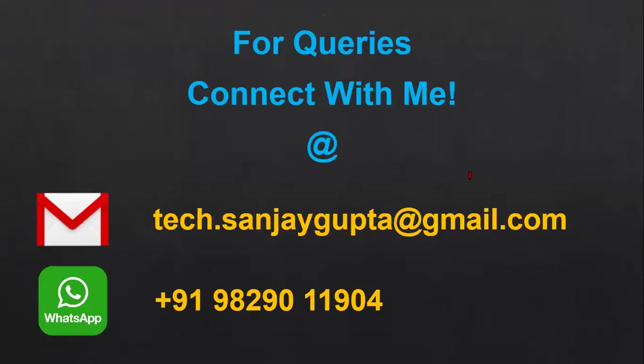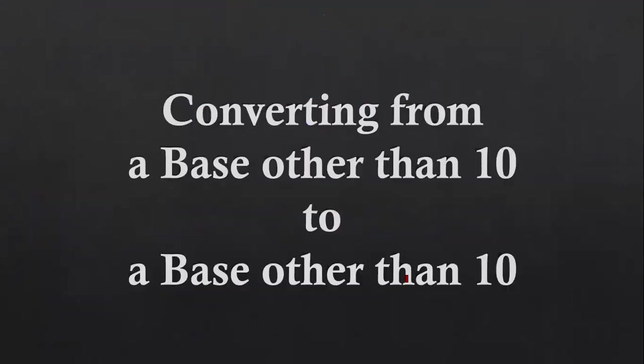For queries, you can connect with me by following these details. In this video, I am going to discuss how you can convert a number whose base is other than 10 to a number whose base is also other than 10. It means we are going to convert any octal number into binary, or binary to octal, or octal to hexadecimal, or hexadecimal to octal. The number which we are going to convert is not decimal, and the resultant number is also not a decimal number.